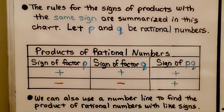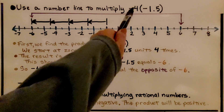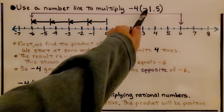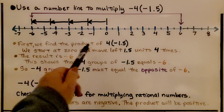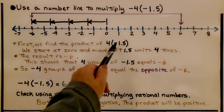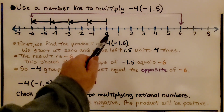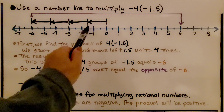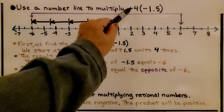We can also use a number line to find the product of rational numbers with like signs. We're going to use a number line to multiply negative 4 times negative 1 and 5 tenths. The first thing we do is find the product of positive 4 and negative 1 and 5 tenths. We start at 0 and move left 1 and a half units — 1 and 5 tenths units — 4 times.